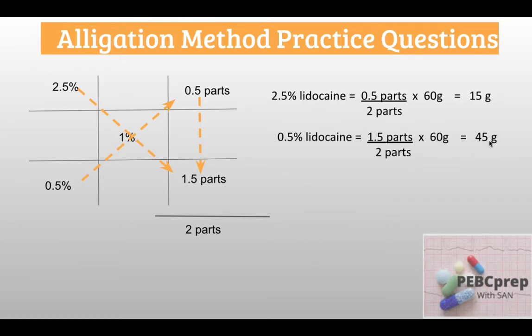So we will take 15 grams of 2.5% lidocaine and 45 grams of 0.5% lidocaine. This gives us 60 grams at the desired concentration of 1% for our final preparation. Let's move on to our next question.